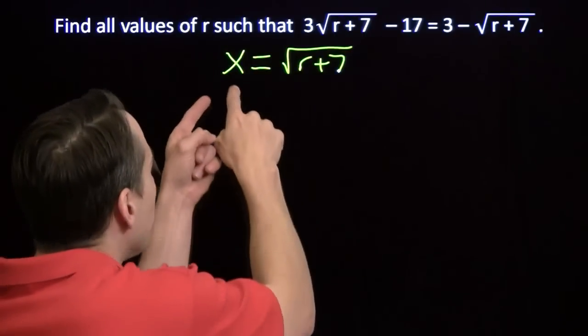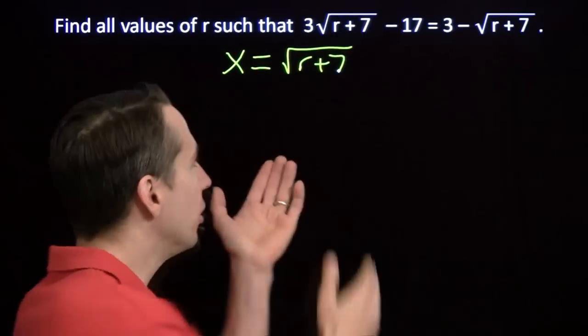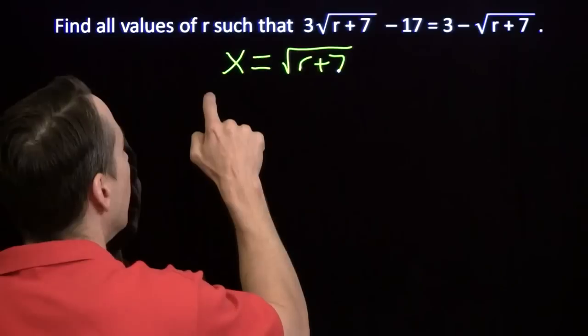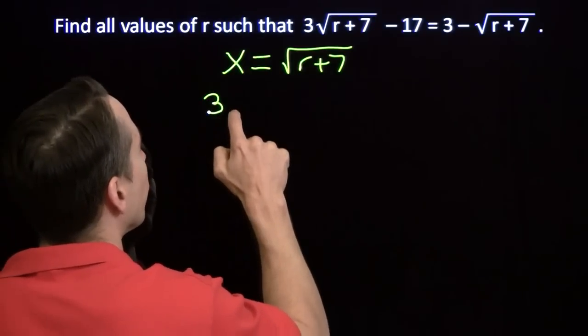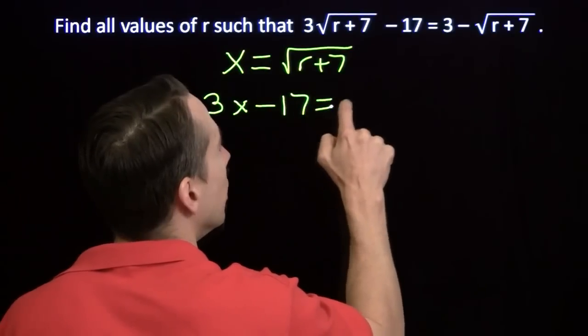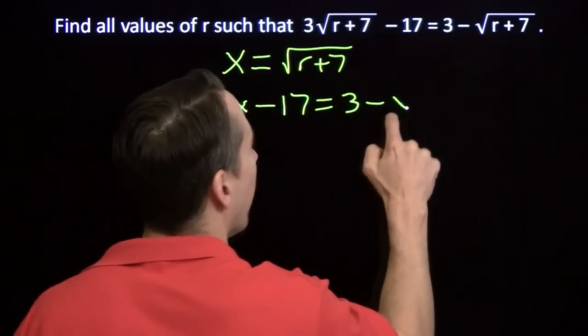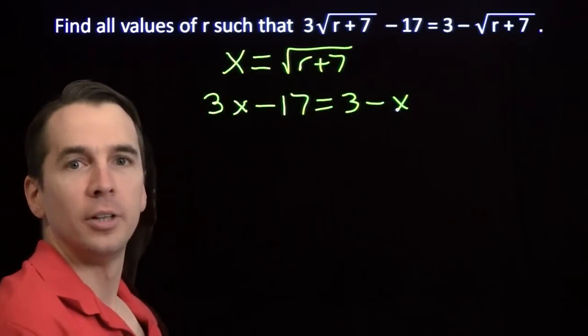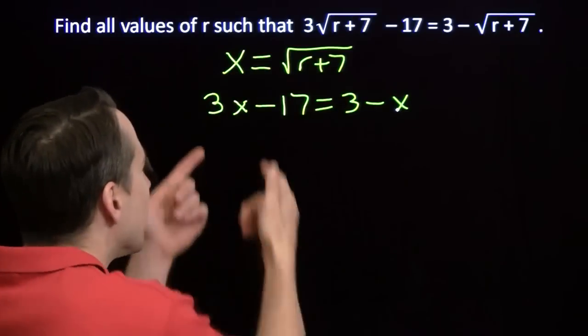And then we're going to put in x everywhere we see this square root of r plus 7. And then our equation just becomes 3x minus 17 equals 3 minus x. Poof. The scary stuff is gone. Just like that.